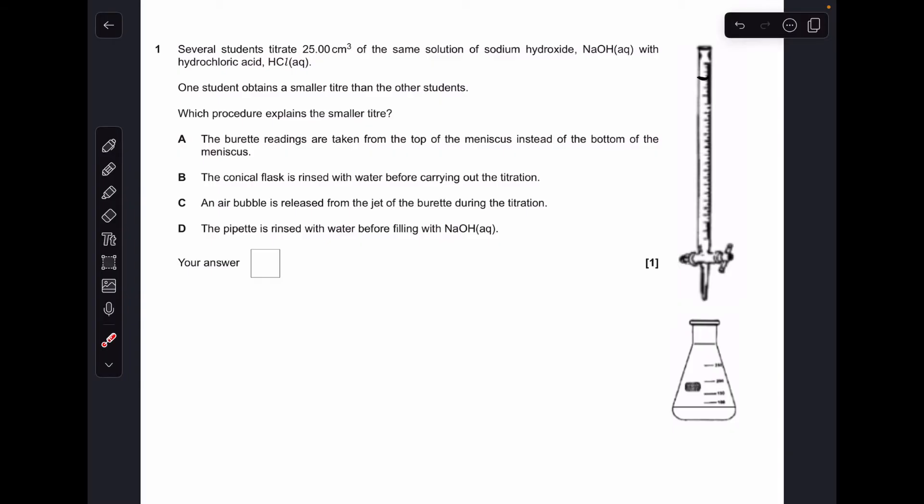Okay, so let's make a start. We'll just run through each of the four scenarios and see which one would generate a smaller titre. First one, the burette readings are taken from the top of the meniscus instead of the bottom of the meniscus.